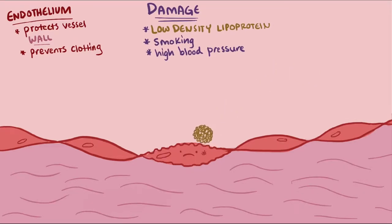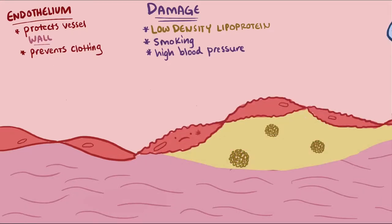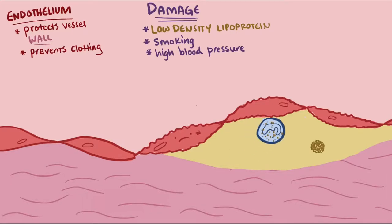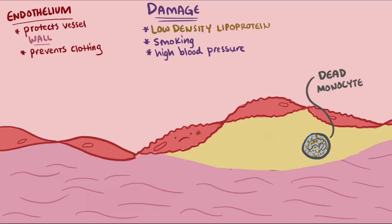The damaged endothelium allows low density lipoproteins to enter the endothelial wall. White blood cells called monocytes follow the low density lipoproteins and break them down through oxidation. If there are a lot of low density lipoproteins, the macrophage will eat so much cholesterol that it can die — it basically eats itself to death. After it dies, it deposits itself under the damaged endothelium.